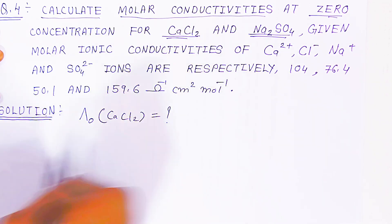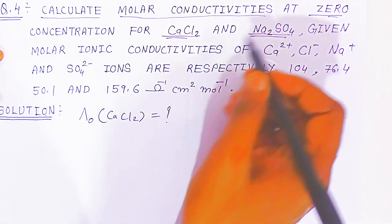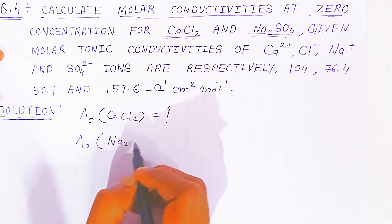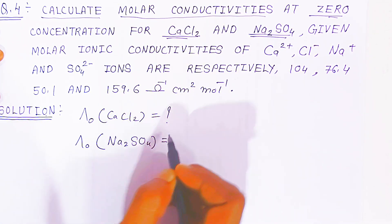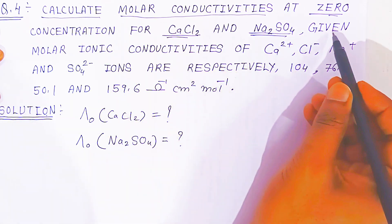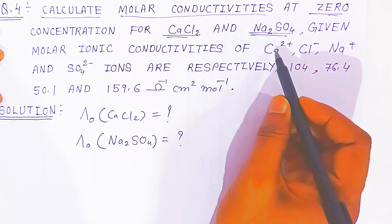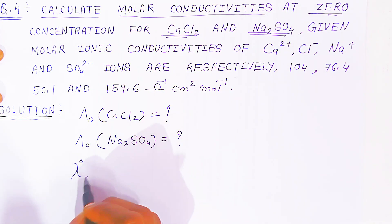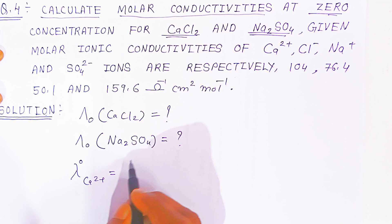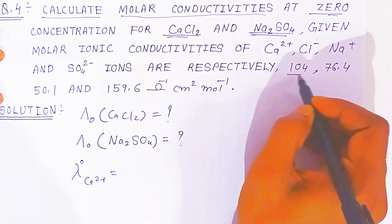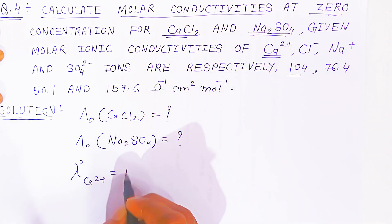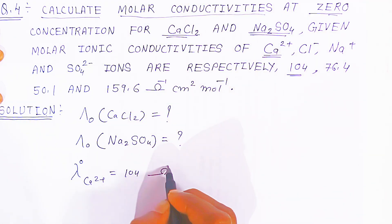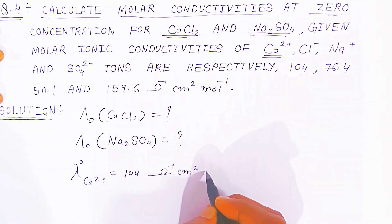What will be the molar conductivity at zero concentration of calcium chloride and molar conductivity at zero concentration of sodium sulfate Na₂SO₄? What is given? The molar conductivity at zero concentration of Ca²⁺ is given as 104 ohm inverse centimeter square per mole.